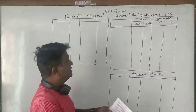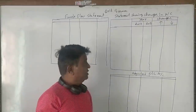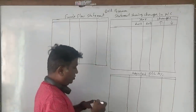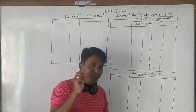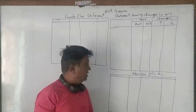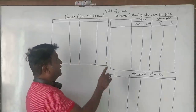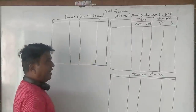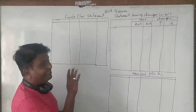The question is asking us to prepare a statement of changes in working capital and a funds flow statement. Along with this, preparation of an adjusted profit and loss account is a must, because we need to know the funds from operations — how much funds we have earned through profits. So for every 14 marks question, we need to prepare all three: statement of changes in working capital, adjusted profit and loss account, and funds flow statement.